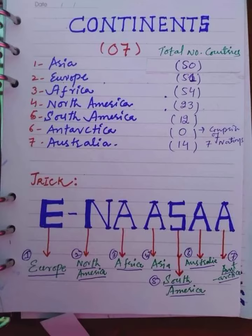The mnemonic is E-NASA: E for Europe, N for North America, A for Africa, A for Asia, S for South America, A for Australia, and A for Antarctica.